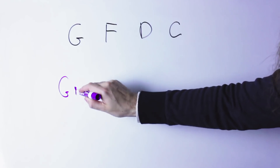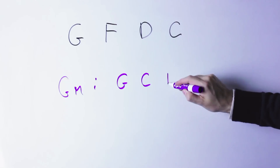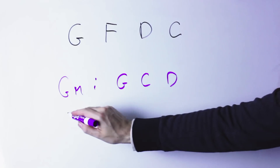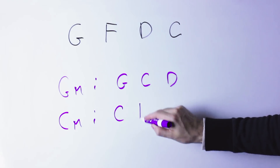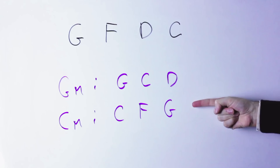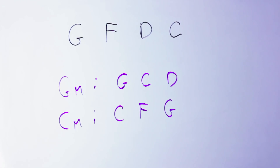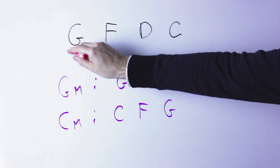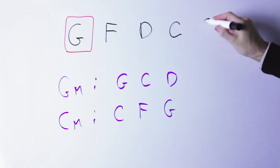Another example is a chord progression like G, F, D, C. The key of G contains G, C, and D — three chords — and the key of C contains C, F, and G — also three chords. So if we just count the number of matching chords, those two keys are equally likely. But the chord progression starts from G, and if you play G at the end it sounds like it finishes there.